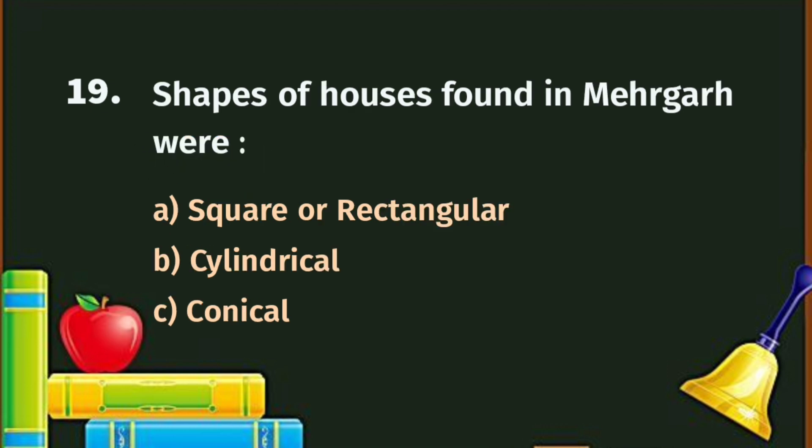Question number 19. Shapes of houses found in Mehargarh were: A. Square and rectangular, B. Cylindrical, C. Conical. The correct answer is A - Square or rectangular.